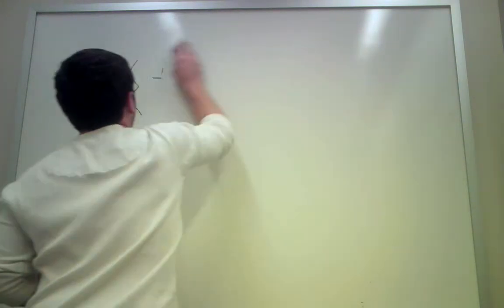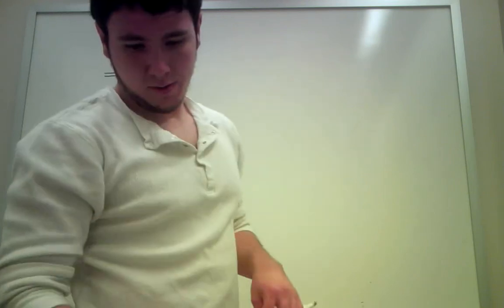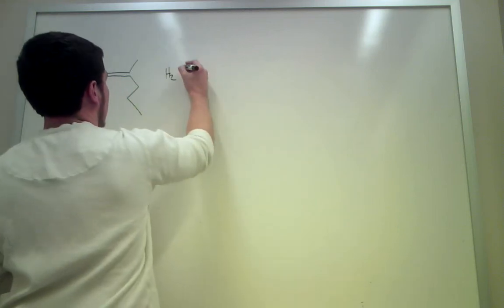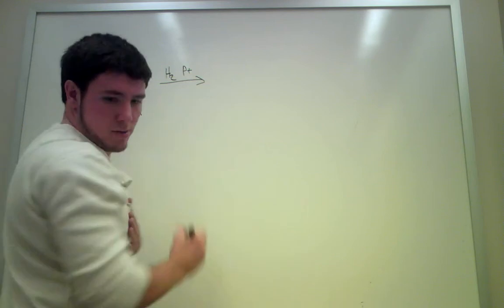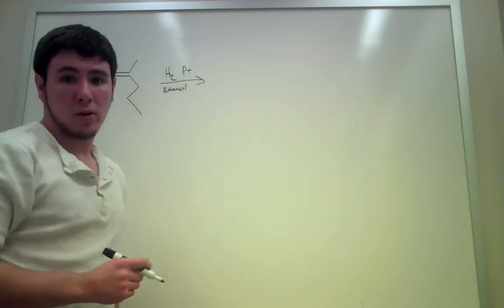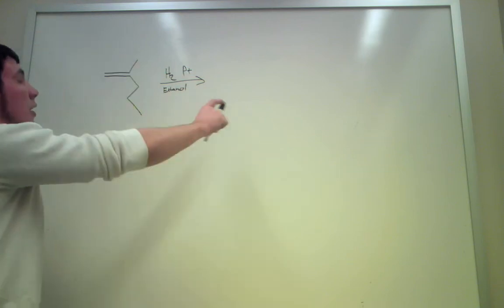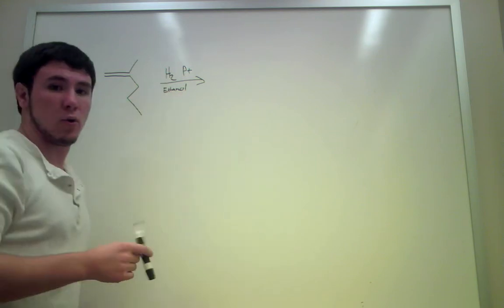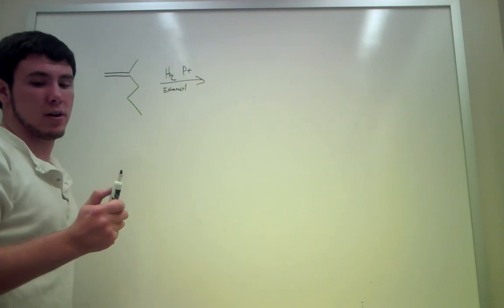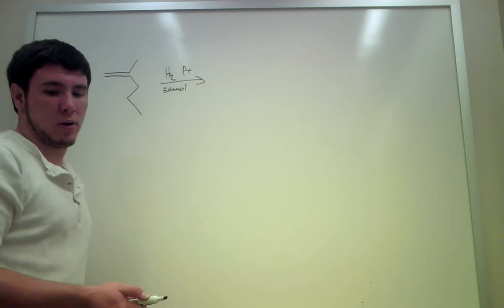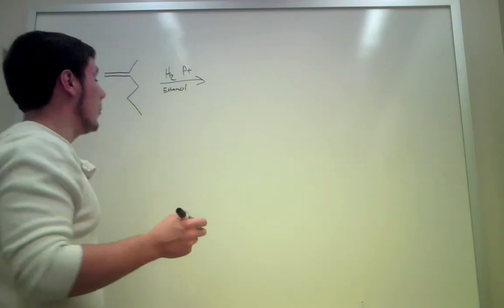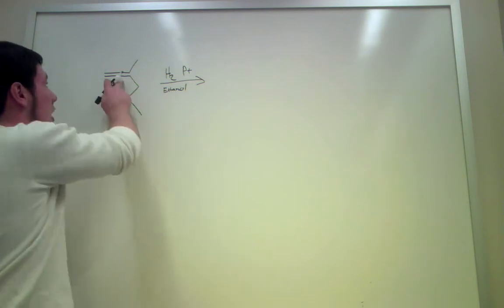Now we'll work with the same alkene. Let's grab another one here. Let's try with H2, platinum in ethanol. So, we've got this right here. I know that H2 and platinum are going to form the hydrogenation of this molecule right here.